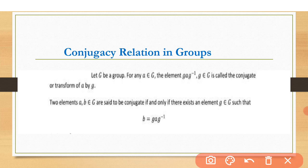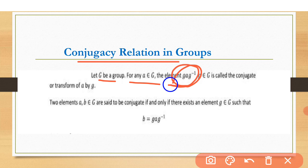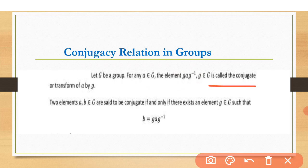Conjugacy relation in groups. What is conjugacy relation? Let G be a group. For any element a belonging to G, and g belonging to G, since G is a group, if g belongs to G then its inverse also belongs to G. The element g·a·g⁻¹ is also an element of G. This is called the conjugate or transform of a by g.